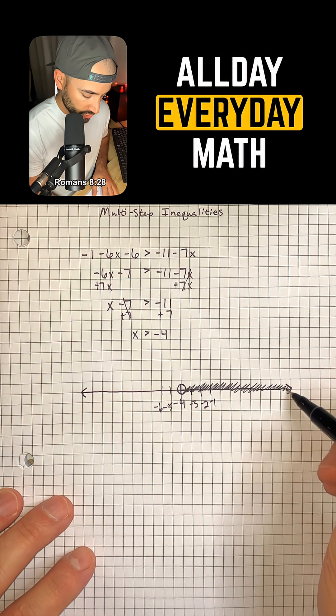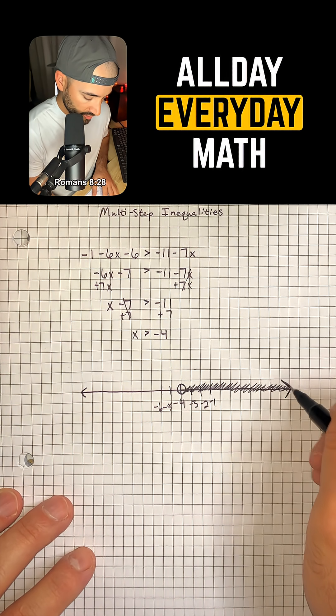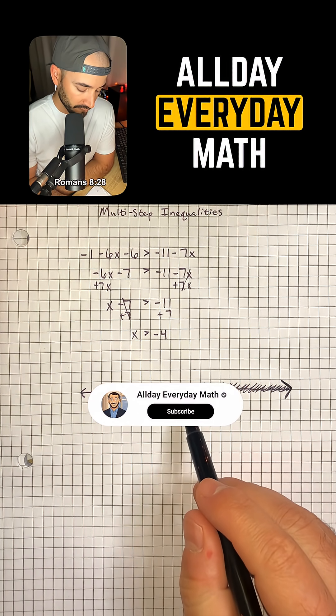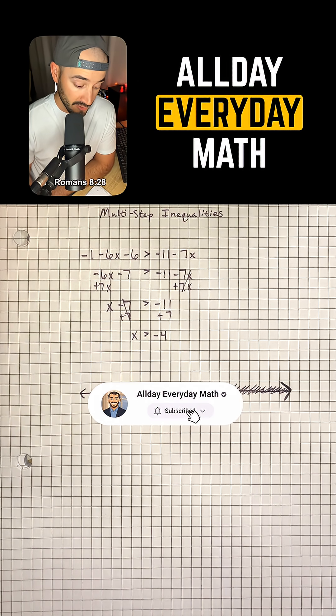And then we can draw our arrow to show that our solution set is all real numbers greater than negative 4. And that is all you have to do.